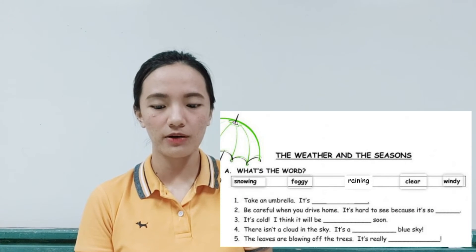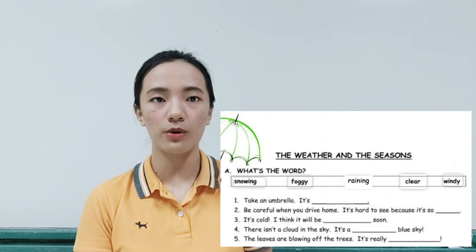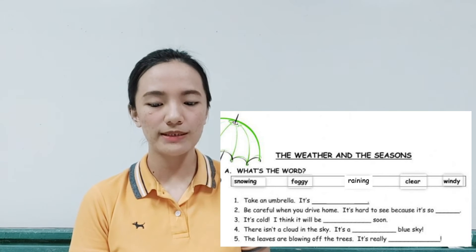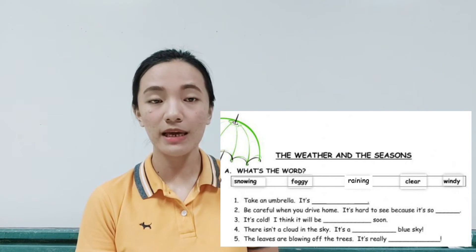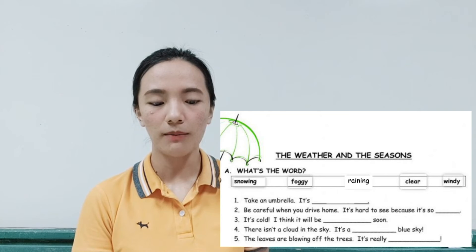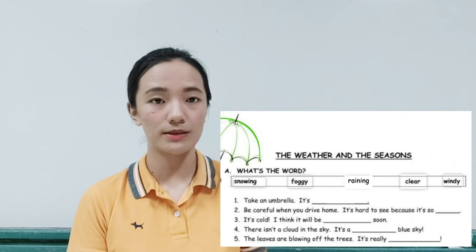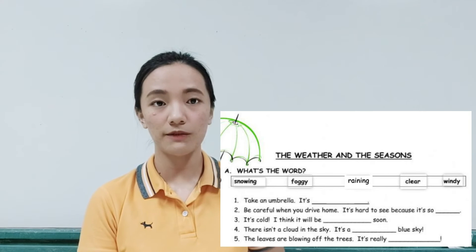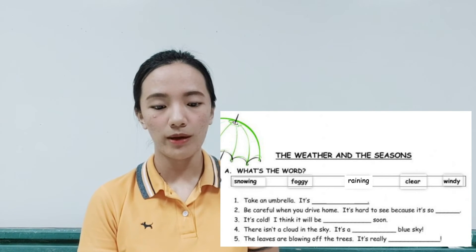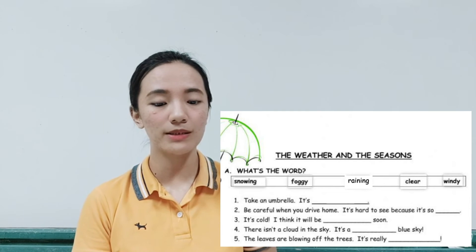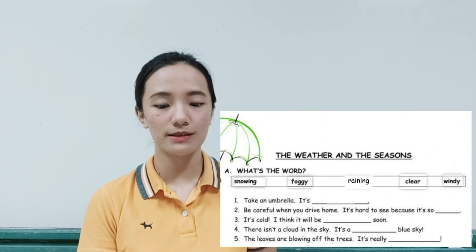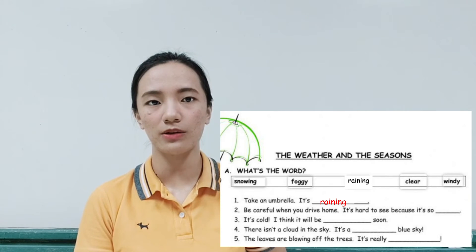Part two: the weather and the seasons. Letter A — what's the word? For example, number one: the description is 'take an umbrella, it's blank.' So when do we use an umbrella — when it's snowing, foggy, raining, clear, or windy? The correct answer is when it's raining. Write the answer on the blank.